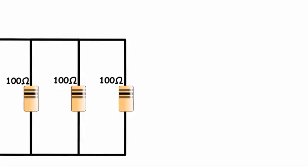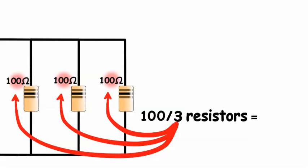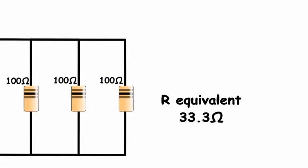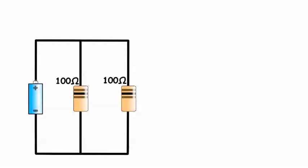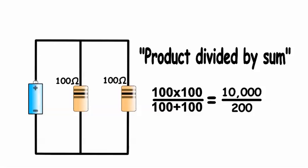One other thing to note is that if the parallel resistors are equal, you can divide that resistance value by the number of resistors. If you have only two resistors in parallel, you can use the product over sum method.